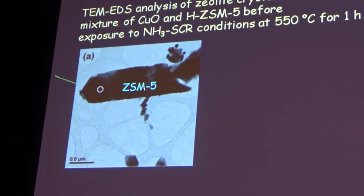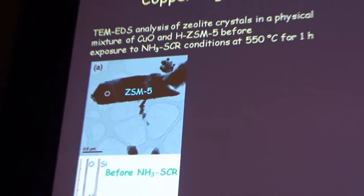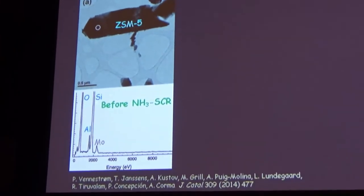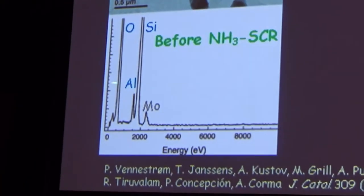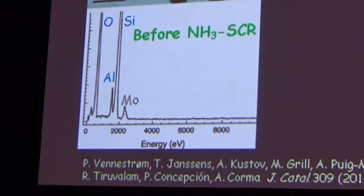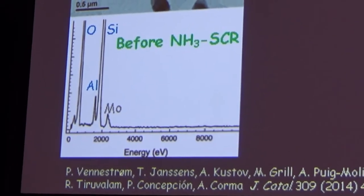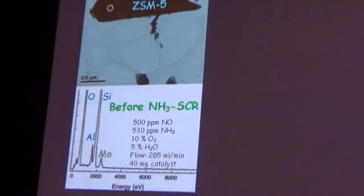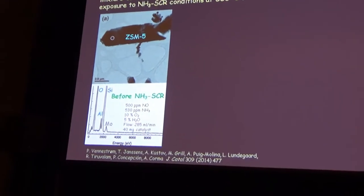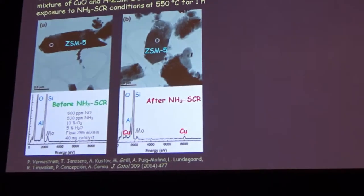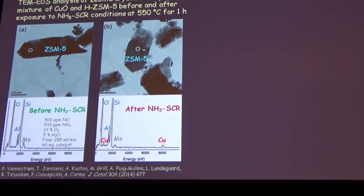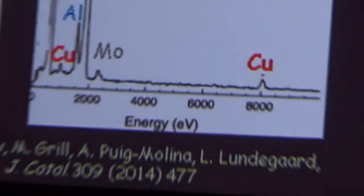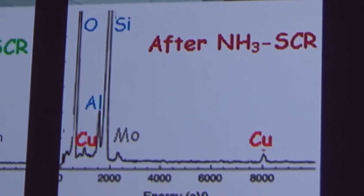They analyzed a spot with EDX and could see oxygen, silicon, and aluminum—which should be there. Molybdenum and carbon were also present but from the sample grid. After exposing to ammonia SCR conditions for one hour, the same analysis on another crystal showed oxygen, silicon, alumina, but also copper. So somehow, during only one hour, copper had migrated into the zeolite structure.